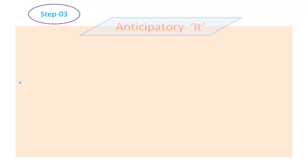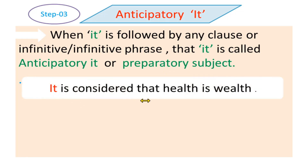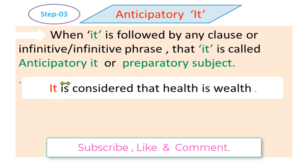Now step 3 — anticipatory 'it'. When 'it' is followed by any clause, infinitive, or infinitive phrase, that 'it' is called anticipatory 'it' or preparatory subject. Example: 'It is considered that health is wealth.' Here 'it' is followed by a 'that' clause — 'that health is wealth' — making 'it' the anticipatory or preparatory subject.